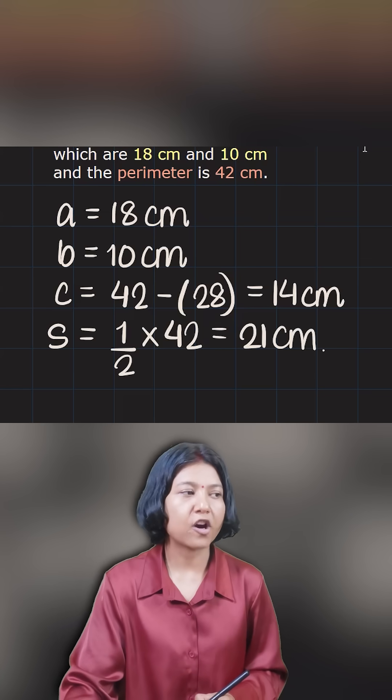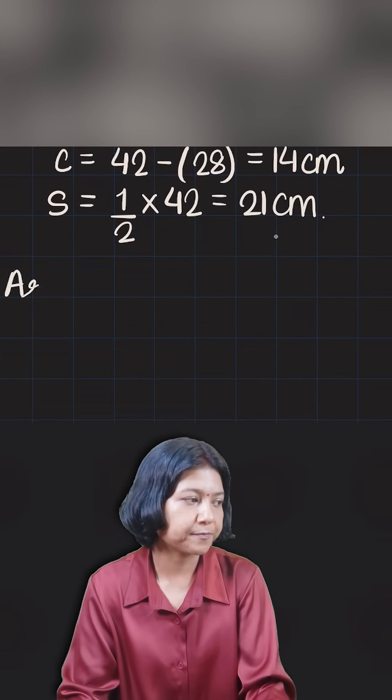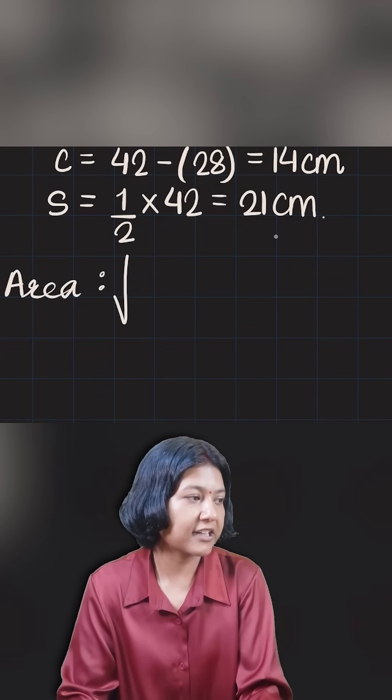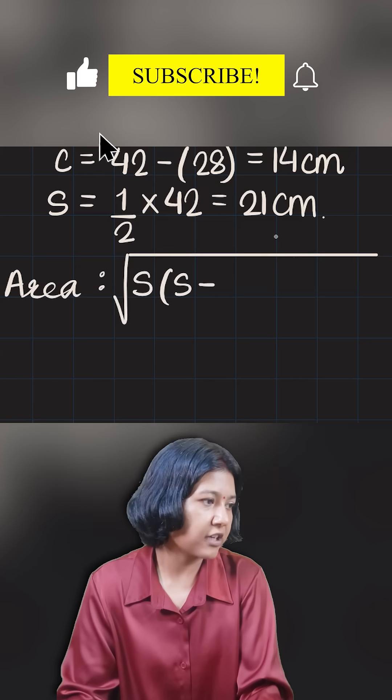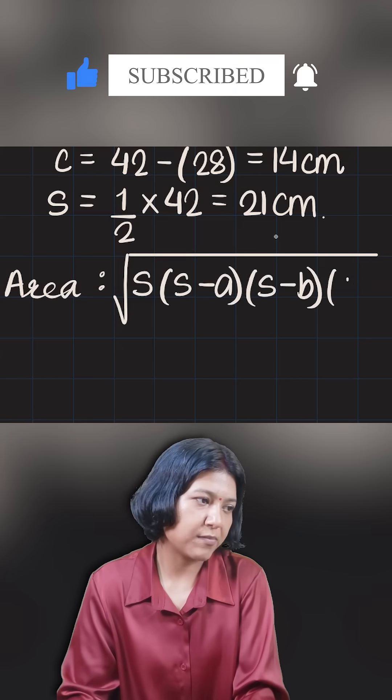This formula will help you find the area provided you know all the sides. The technique is: take the square root, take the semi-perimeter, find the difference of each side with the semi-perimeter.